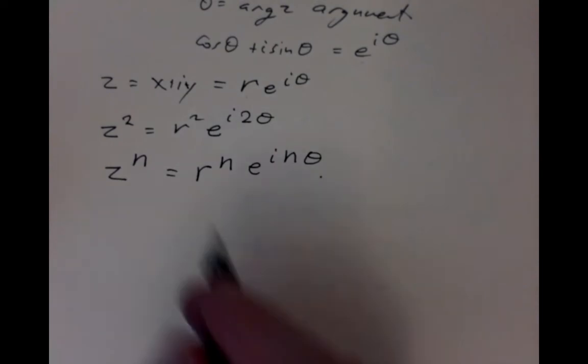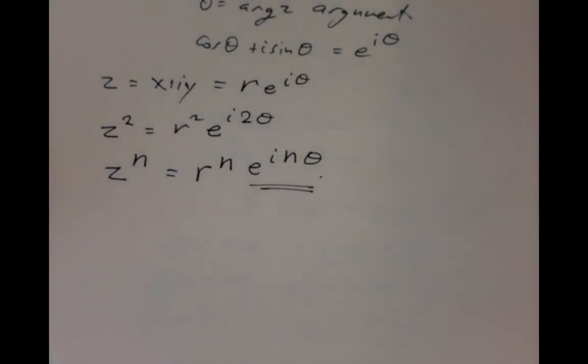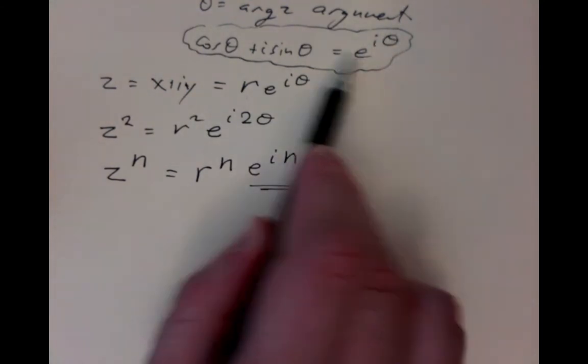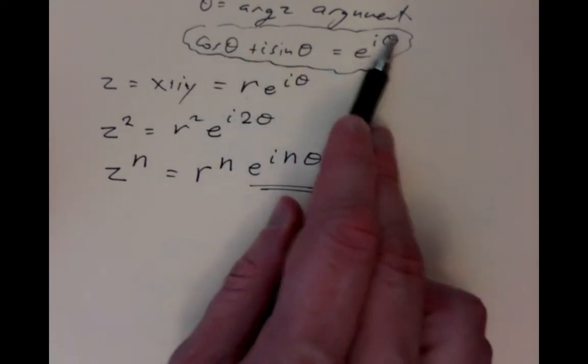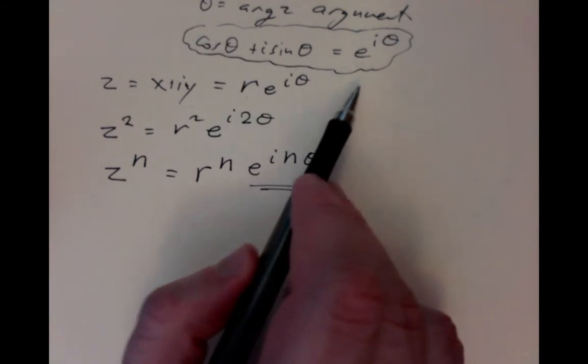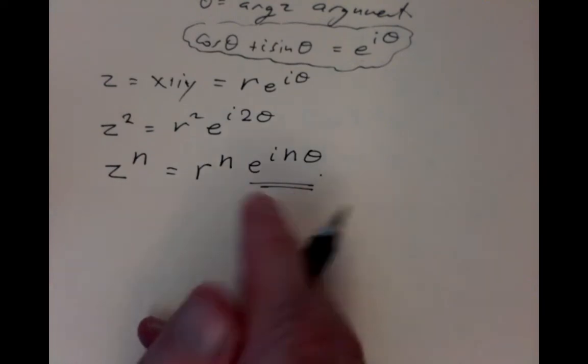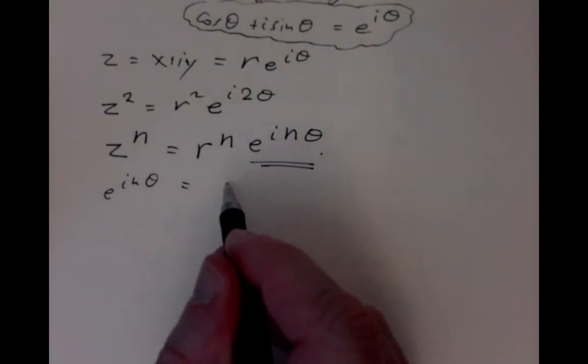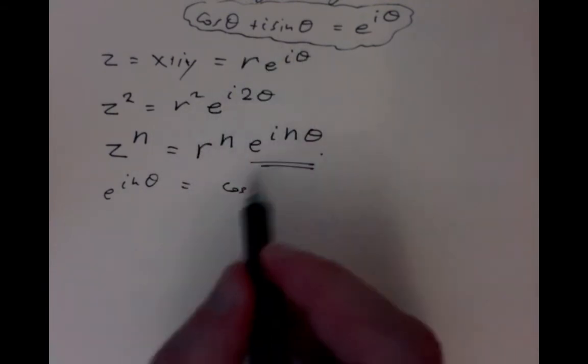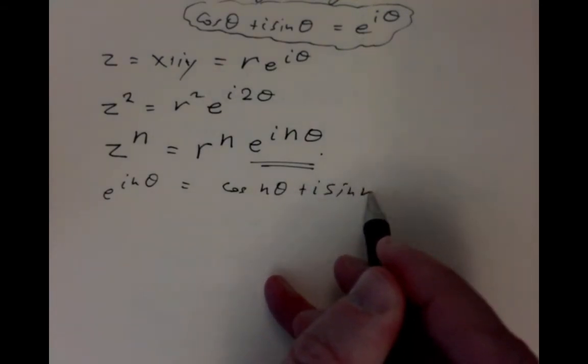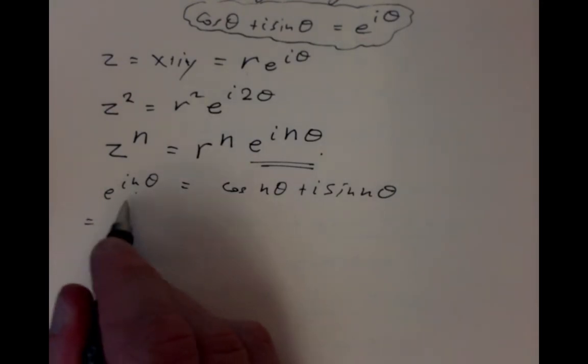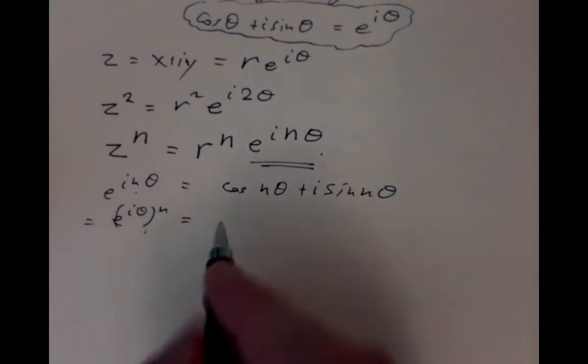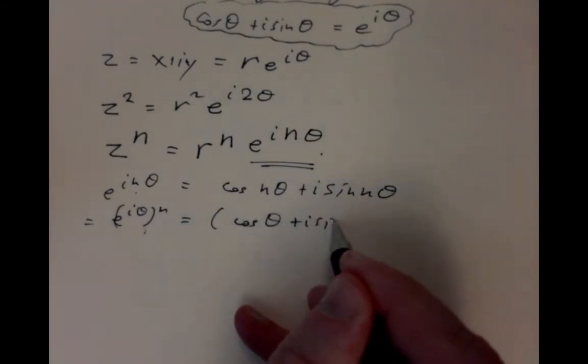It gives rise to a rather trivial trigonometric identity. If we go back again, we could rewrite this e to the i n theta as cos n theta plus i sine n theta. But if we take into account that this is n-fold multiplication, that's an exponential raised to n, that gives us cos theta plus i sine theta all to the nth power.